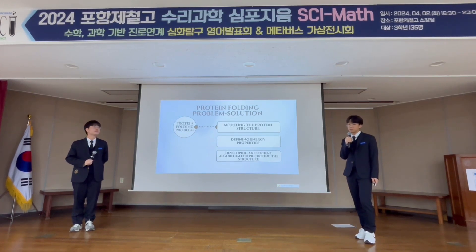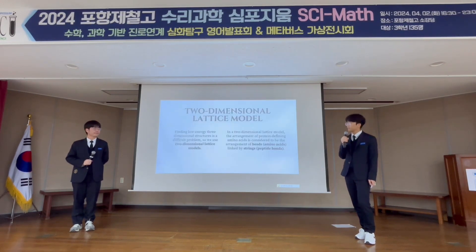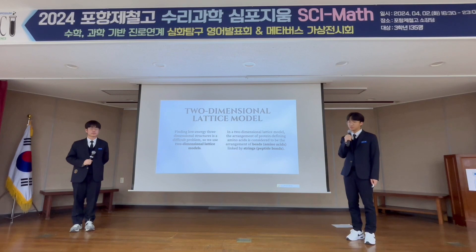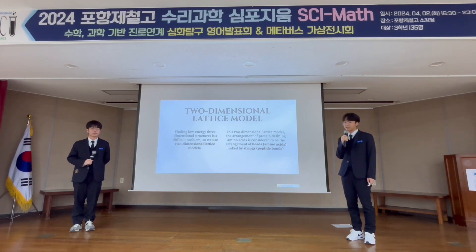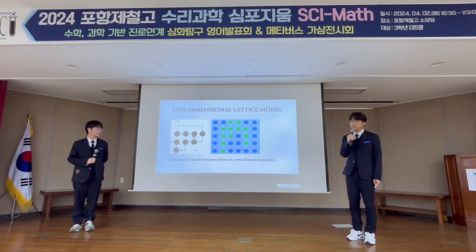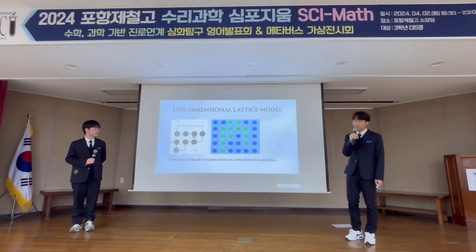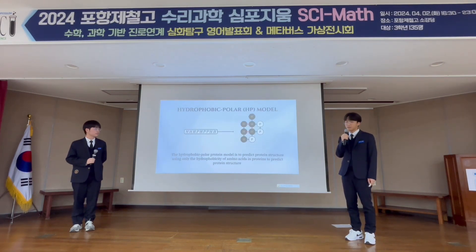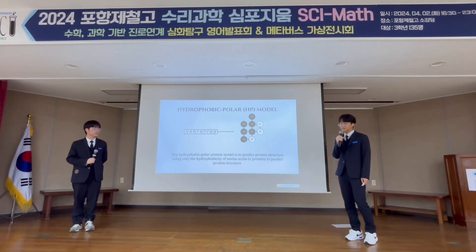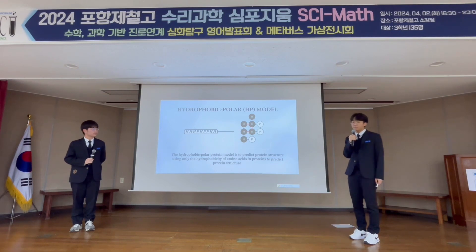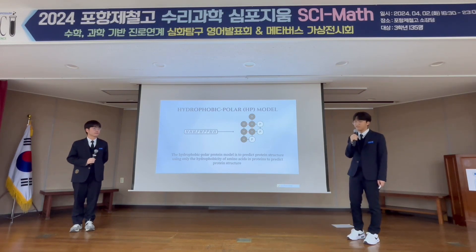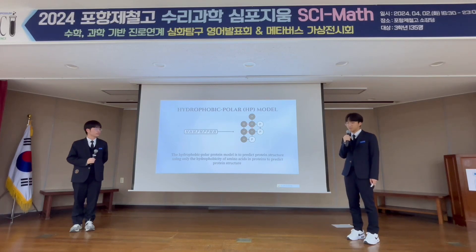We are going to show you an effective protein model that can solve the protein folding problem in a simple form — the two-dimensional lattice model. Finding low-energy three-dimensional structures is a difficult problem, so we use two-dimensional lattice models. In a two-dimensional lattice model, the arrangement of protein-defining amino acids is considered to be the arrangement of beads, which represent amino acids linked by strings, which are peptide bonds. The chain of beads occupies points on a two-dimensional lattice. Now let's look at the hydrophobic polar model, a representative example of the two-dimensional lattice model, first proposed by Dill in 1985.